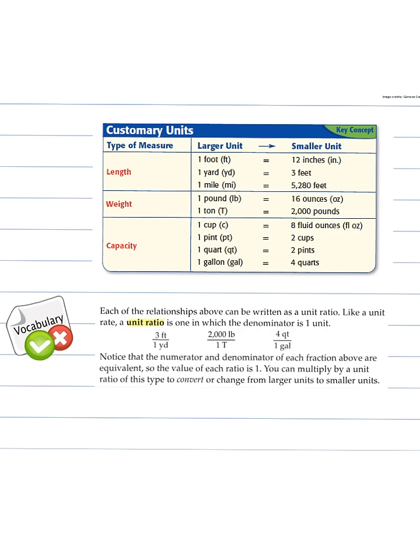In this chart here we have some of our customary units, the units that we use here. For measuring length we measure in feet or yards or miles. Weight we talk pounds and ounces, and for capacity we use our cups, our fluid ounces, quarts, things like that.